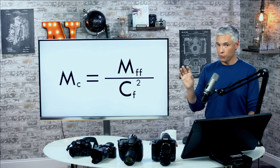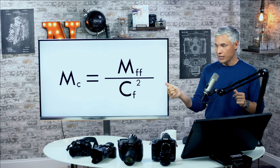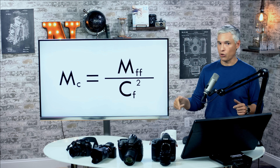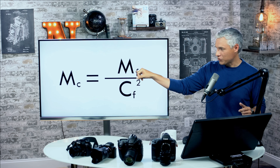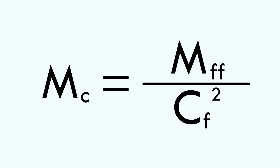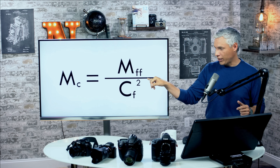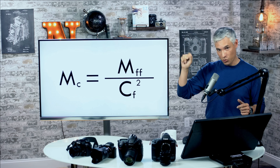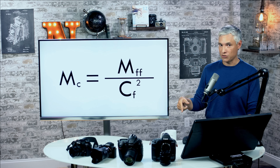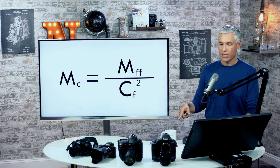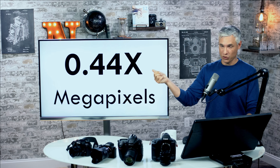First, a formula. If you're going to put an APS-C lens — a lens designed for small format cameras — on a full-frame body, this is how you can predict how many megapixels the resulting picture is going to be. You take the megapixels of the full-frame camera and divide it by the crop factor squared. So if you're using a 36-megapixel D810, you divide 36 by 1.5 squared, and you get the resulting megapixels. A simpler way to phrase it: multiply the full-frame megapixels by 0.44.